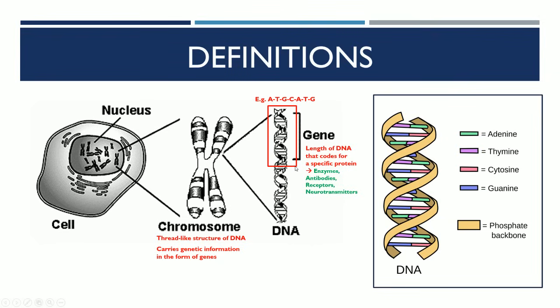There must be a lot of different genes in our DNA because we have a lot of different proteins - things like enzymes, antibodies, receptors, neurotransmitters. We have heaps of them and they're all really essential for the human body to work properly.